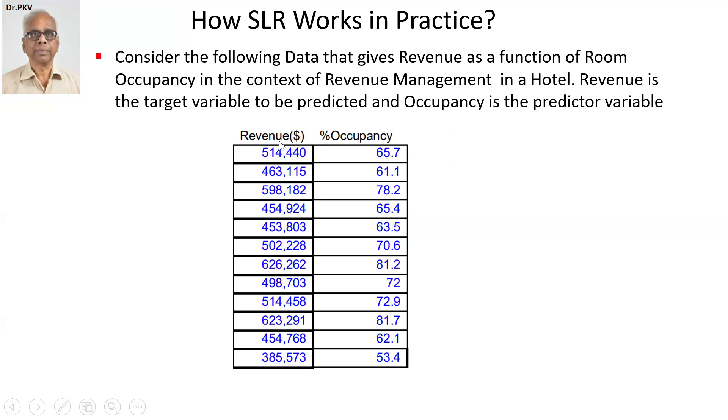Revenue in dollars, occupancy in percentage, and you can see the data and there are 12 data points. Revenue is the dependent variable Y, percentage occupancy is the feature or predictor variable X.